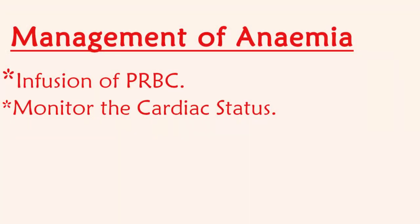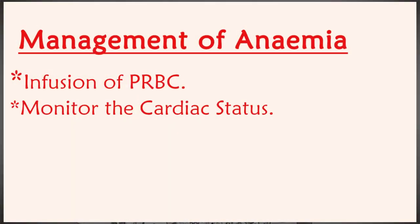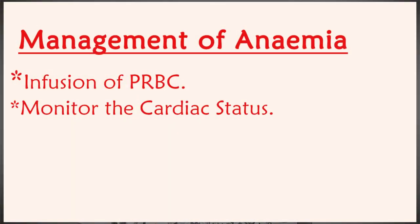Management of severe anemia: anemia is considered when hemoglobin level is less than 7 g per dL. Causes may include blood-based issues or worm infestation. Immediate management of severe anemia involves packed RBC infusion, and the cardiac status of the child must be monitored throughout.